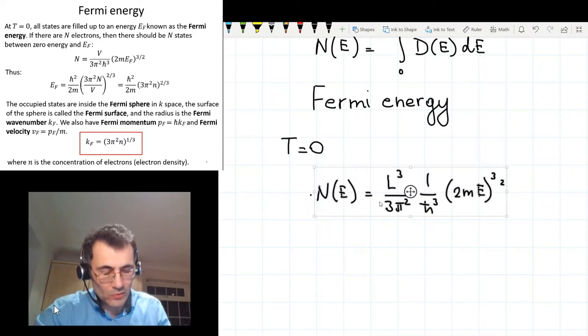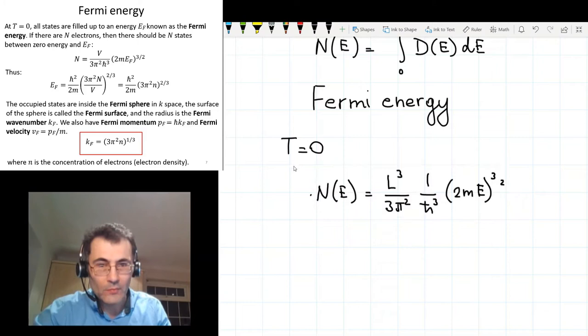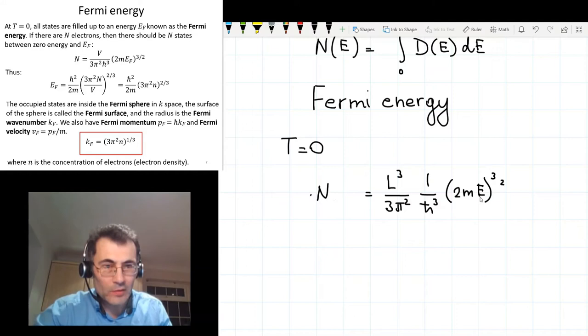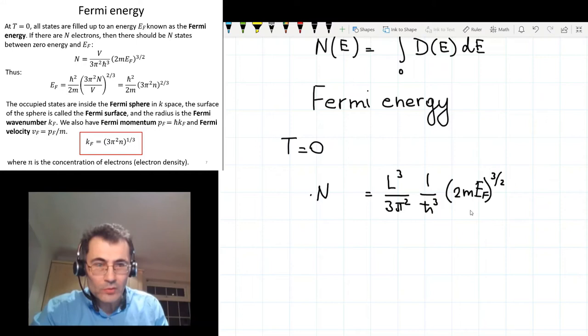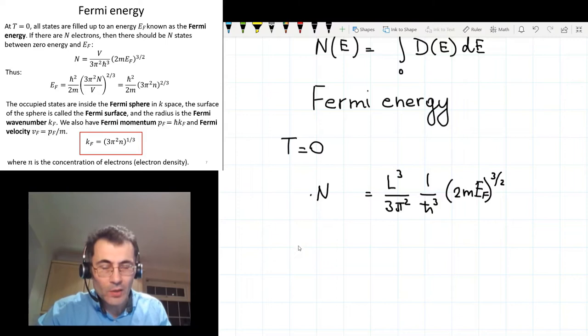So all I have to do now is to replace number of states with number of electrons. And in this case, my energy becomes a Fermi energy. Now I can rearrange terms to express Fermi energy through the number of electrons. I can write it as 3π² ℏ³ N divided by L³ equals 2m Fermi energy to the power 3 halves.